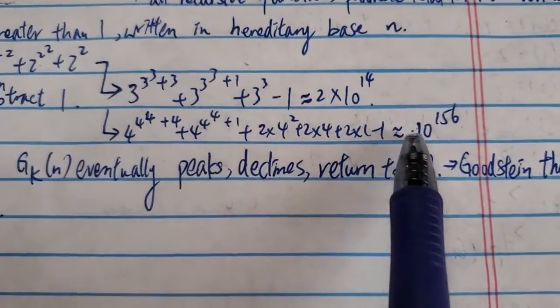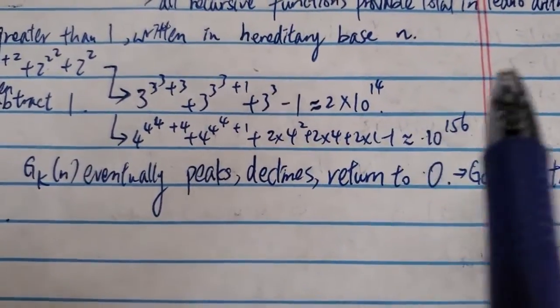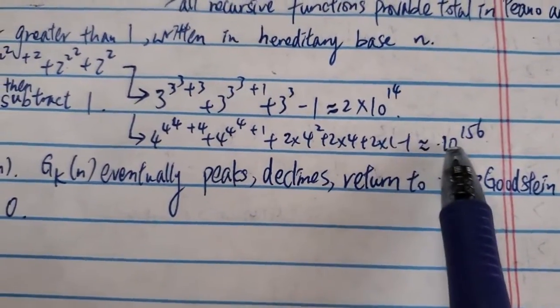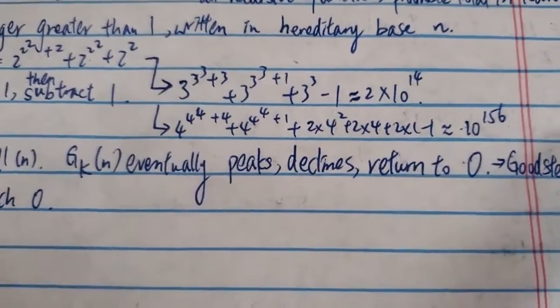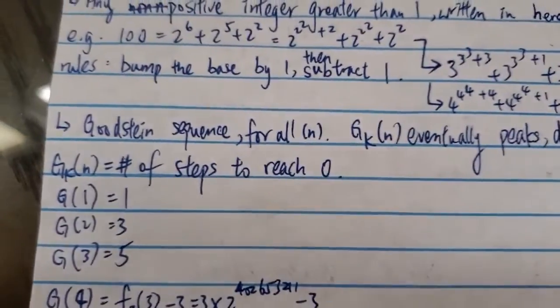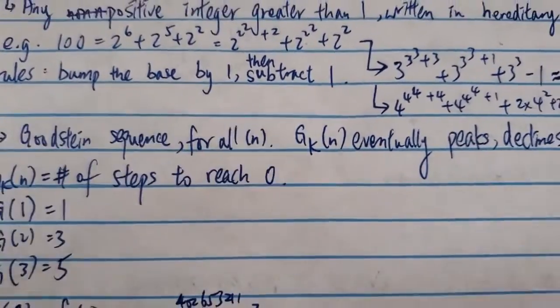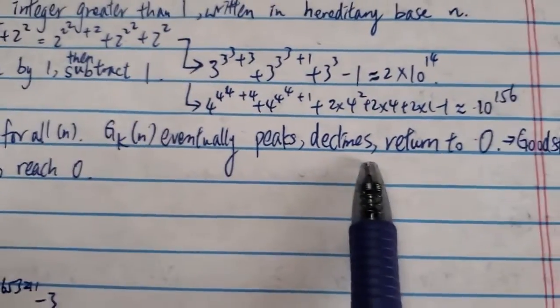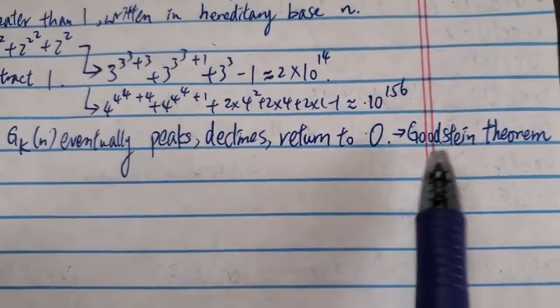Like this number, at first it seems to grow very quickly. So how on earth does this thing eventually go to zero? And that's it, which is called the Goodstein theorem. So for the Goodstein sequence for all n, this sequence eventually peaks, declines, and returns to zero.